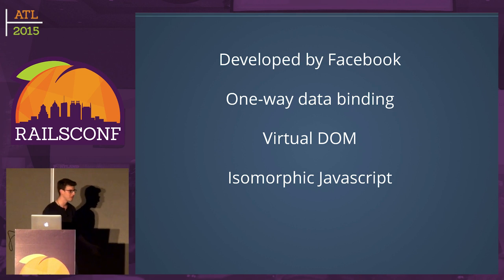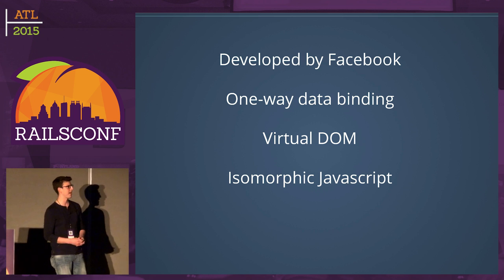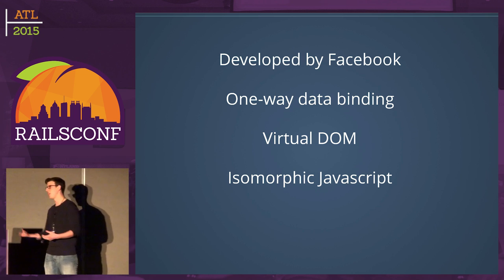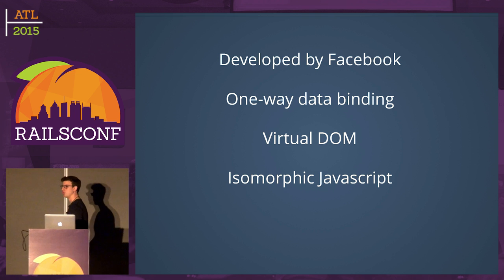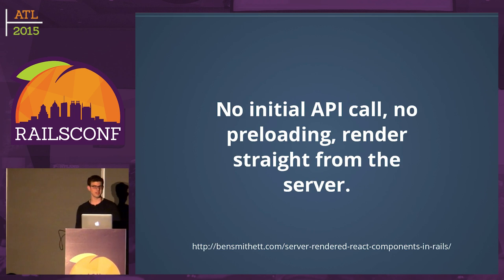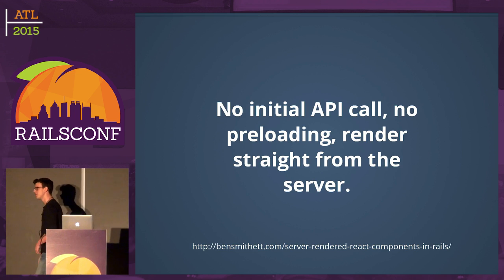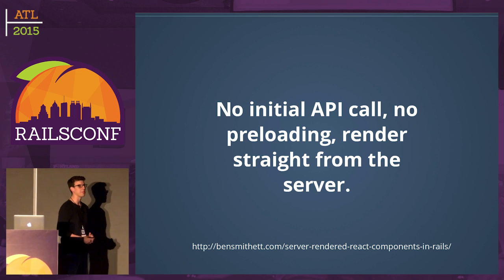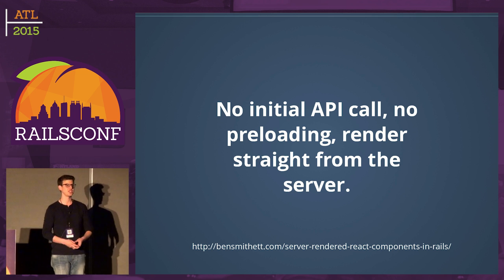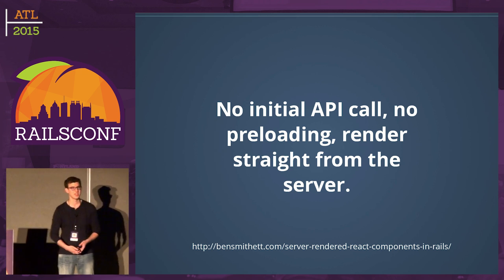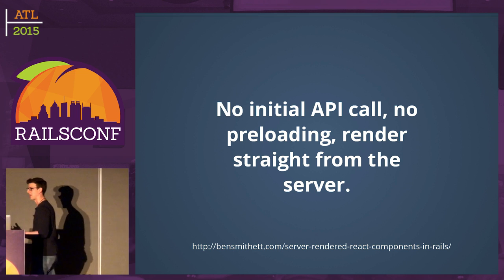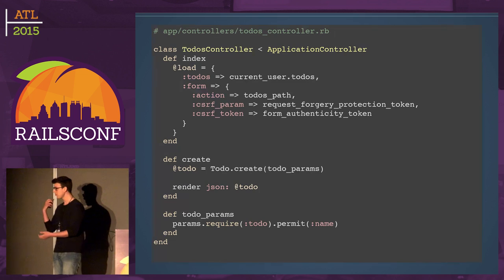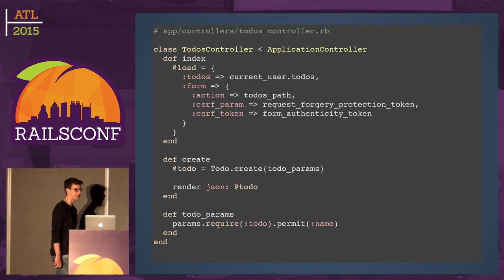The most important thing React leads us to is isomorphic JavaScript — a buzzword that simply means rendering your JavaScript on either the client or on the server. Because React has a virtual DOM, it can use that to render rather than diff. So instead of passing JSON data to the client side, we're going to render straight from the server, skipping all those initial API calls and serving HTML directly.